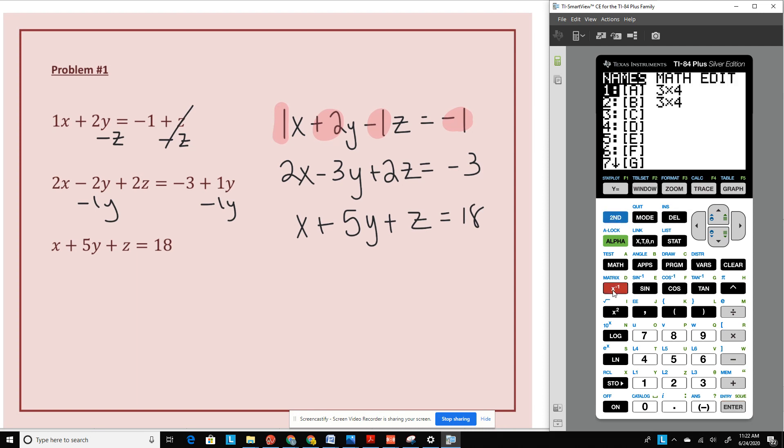So RREF is going to tell the calculator to solve this system for you. Now we're going to go back to matrix. And we're going to select the matrix that we saved it to. In this case, we saved it to matrix B. And this matrix now becomes part of our answer. So if you see three ones here diagonally, that means that this graph is consistent and it has one unique solution.